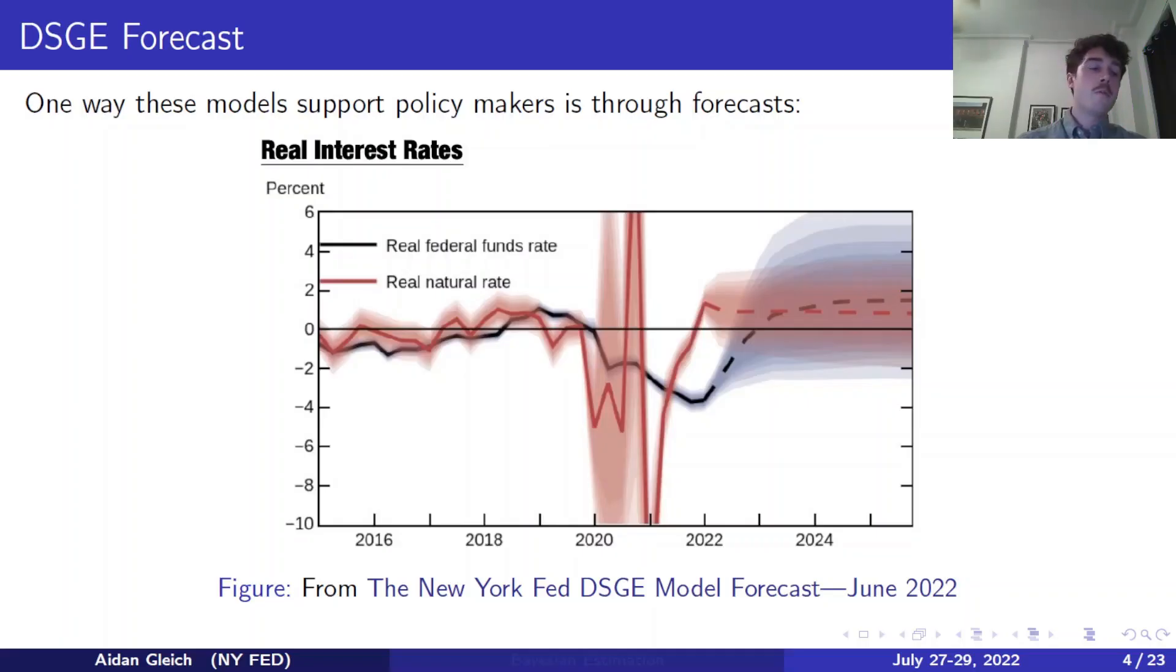Now, those of you who are not macroeconomists may not be familiar with the real natural rate, or R-star. R-star is the interest rate that would prevail in an economy without sticky wages or prices. Now, that means that R-star is a hypothetical concept. It's not something that we can actually observe. However, using DSGE models or macro models, we are able to provide estimates of historical values as well as forecasts of future values.